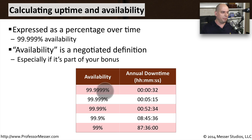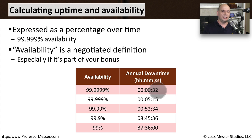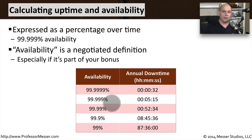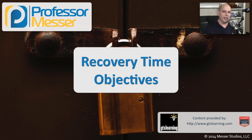If you have availability of 99.9999%, that means your actual downtime — usually over an entire year — is 32 seconds. That's a pretty aggressive availability percentage. For five nines, you can only be down for five minutes and 15 seconds during the entire year. And an availability of 99% means that you were down for a maximum of 87 hours and 36 minutes over that entire time frame. You can see the difference between 99% availability and five nines is very large, and it also means you have to have a lot of redundancy and planning in place to achieve five nines of availability.